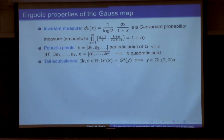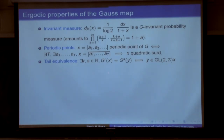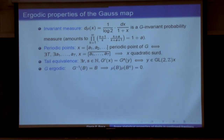Tail equivalence: two numbers x and y have eventually the same tail — meaning that after chopping to possibly different positions r and s, they end up with the same thing — if and only if they lie in the same GL₂(ℤ) orbit of one another. That's elementary. G itself is ergodic; this can be proved analytically or geometrically.